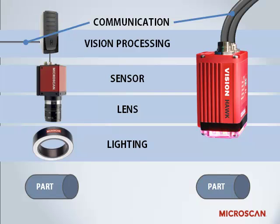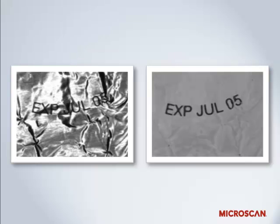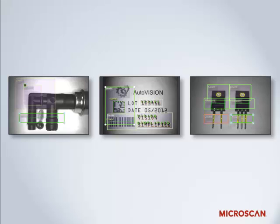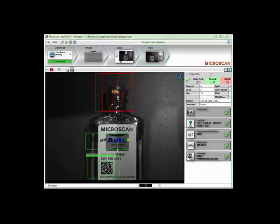So, let's review. Machine vision systems may be integrated, such as a smart camera, or they may contain multiple components, such as a gigabit Ethernet camera solution. The five key components are lighting, lens, sensor, vision processing, and communication. Lighting is critical to the success of a machine vision application and should make the features you're going to inspect stand out. The lens captures the image and delivers it to the sensor in the form of light. The sensor converts the light into a digital image. The processor uses software algorithms to extract useful data from the image and determine the results of the inspection. These results are then communicated in a useful manner.